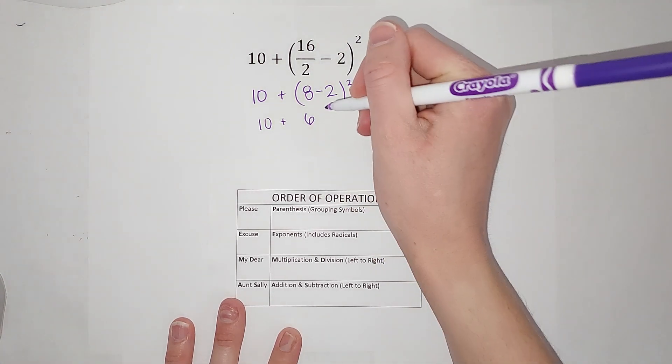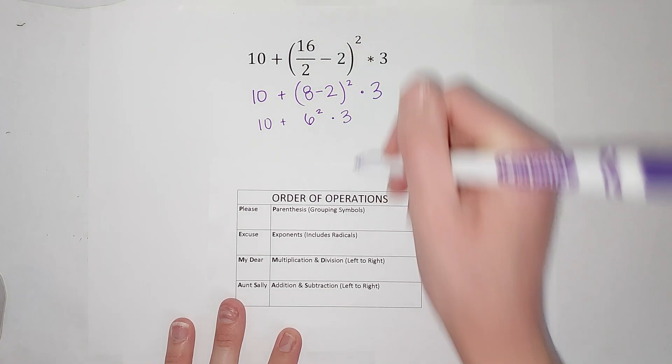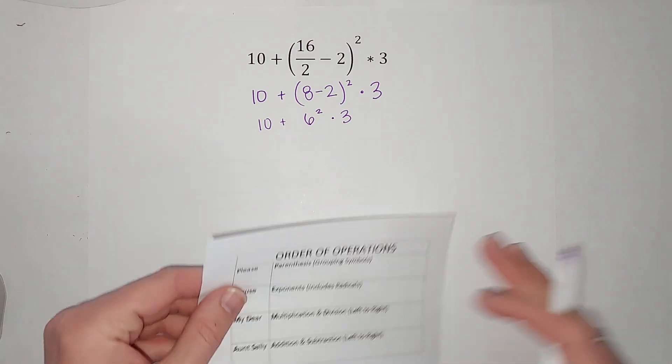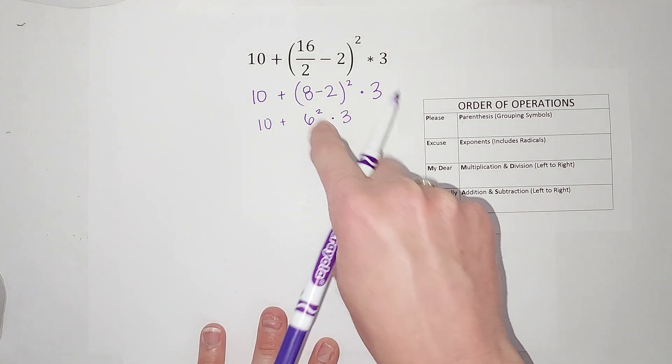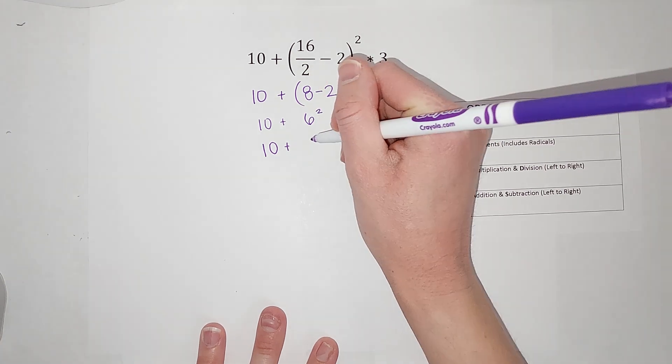If I'm following this, I got rid of my parentheses. Next is exponents, so I'm going to do that squared next. 6 times 6 gives me 36.